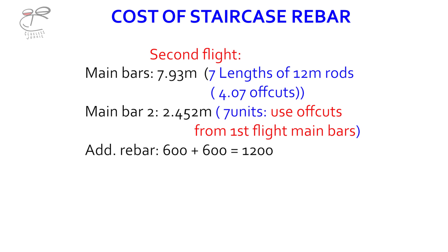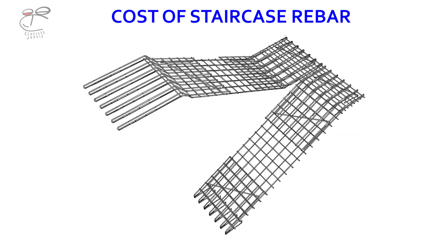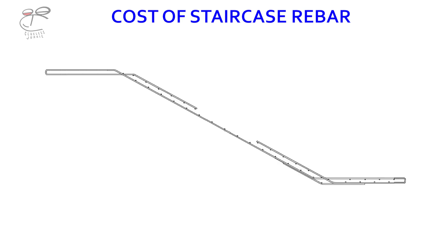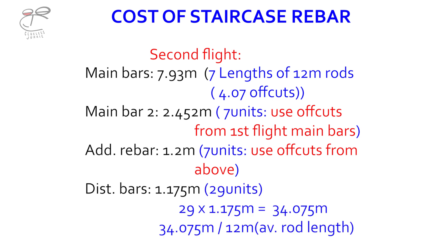Moving on to the distribution bars for the second flight — the number of distribution bars is roughly 29 units. Multiplying 29 by 1.175 gives 34.075 meters. Dividing that by 12 meters gives roughly three lengths of 12-meter rods.